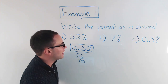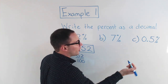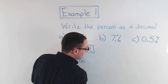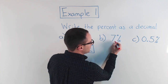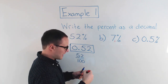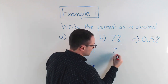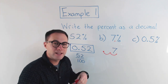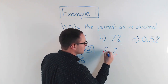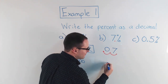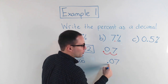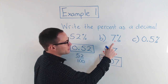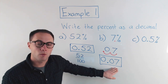Let's do the other ones. For 7%, all I need to do is move the decimal point twice to the left. The decimal point would be here after the 7 — move it once, twice. There's nothing in that place, which means I need to put a zero there as a placeholder. I also put a zero before the decimal so it doesn't start with just a decimal point. So 7% as a decimal is 0.07, or seven one-hundredths.